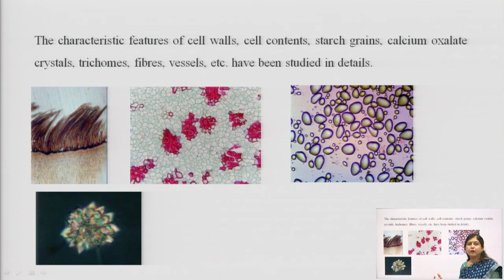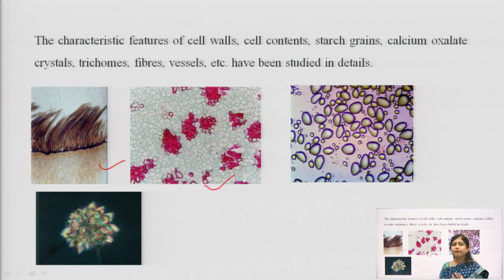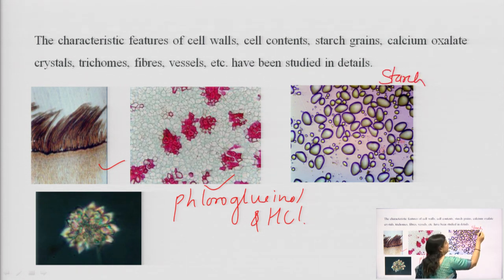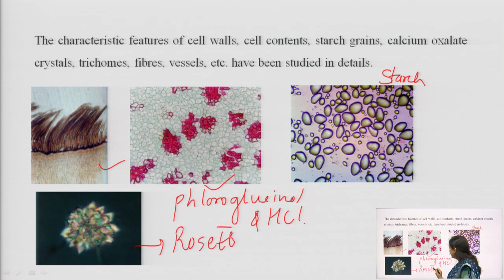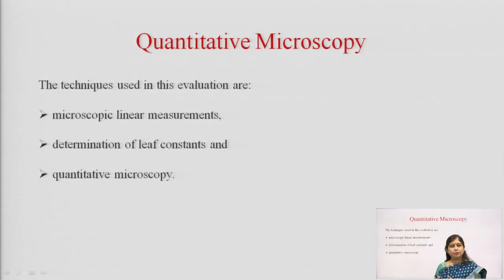Here are some natural microscopy pictures: this is the picture of trichomes of nux vomica seed — when the seed is cut it contains certain trichomes giving a beautiful section. This is a section showing phloem fibers stained pink with fluoroglucinol and HCl in equal proportion. This picture is of starch stained blue with iodine solution, and this is a beautiful rosette-shaped crystal present in rhubarb, a drug used as a laxative. These are the identifying characteristics of different drugs.